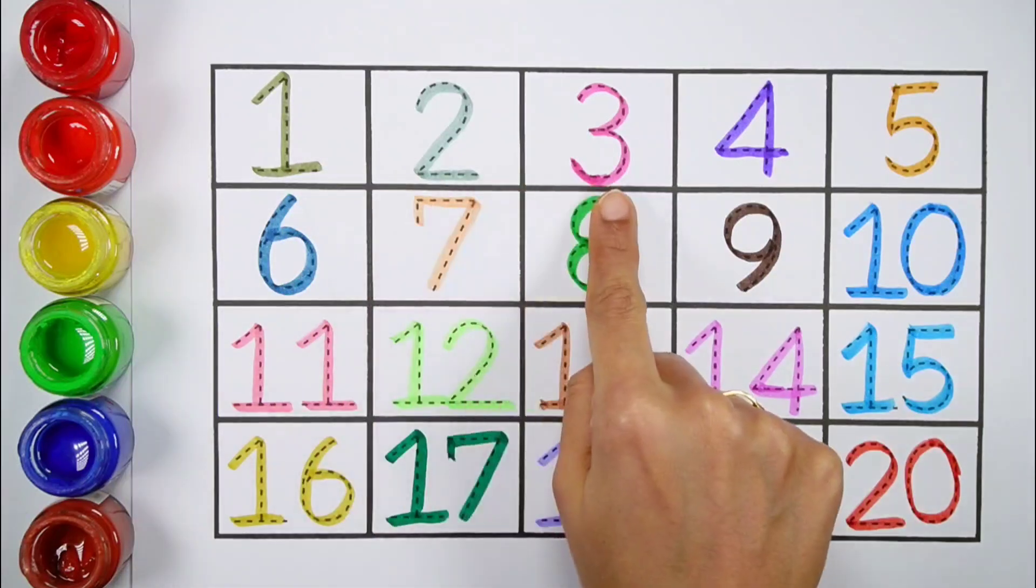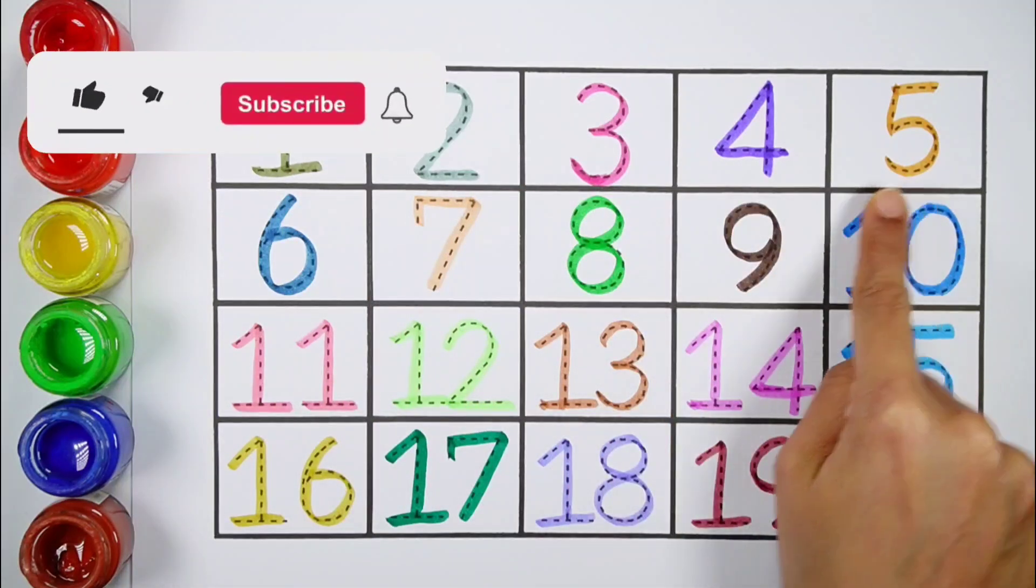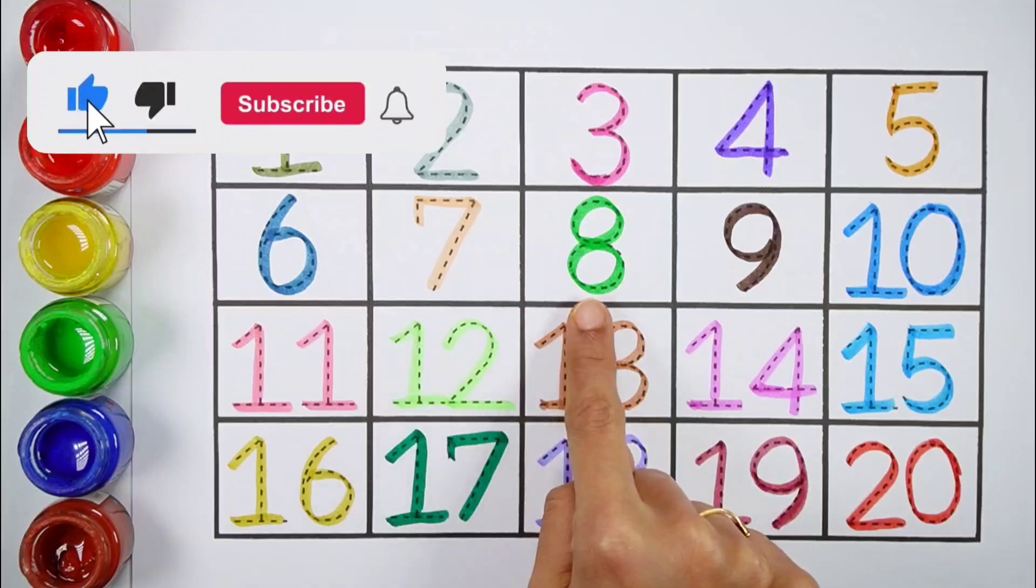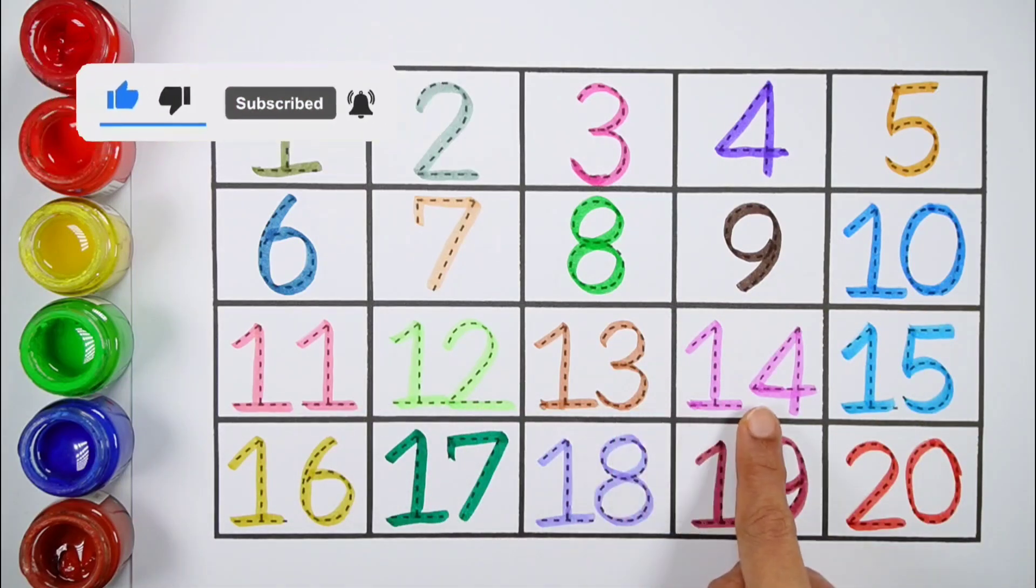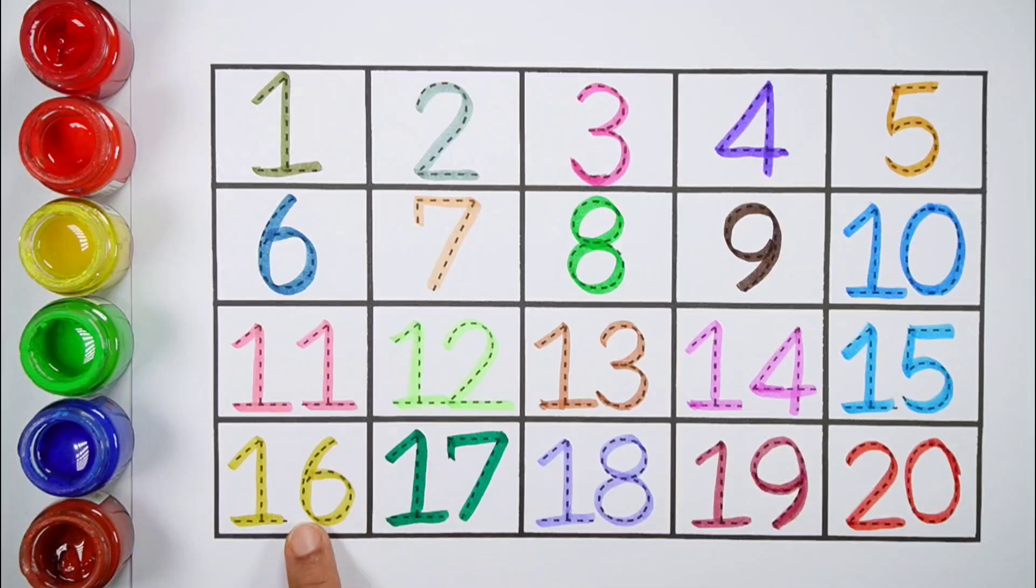1, 2, 3, 4, 5, 6, 7, 8, 9, 10, 11, 12, 13, 14, 15, 16, 17, 18, 19, 20.